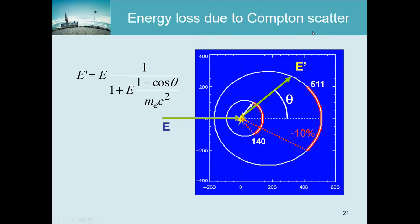Now more on Compton scatter - all our measurements are affected by it, so it's worth examining carefully. The Compton formula describes how much energy the deflected photon retains. Although it was derived for a completely free electron, in practice the electrons our photons interact with are almost free, so the calculations are accurate for our purposes. The expression gives the outgoing photon energy E-prime as a function of the deflection angle theta, compared to the incoming energy E.